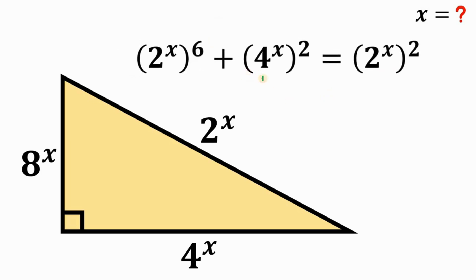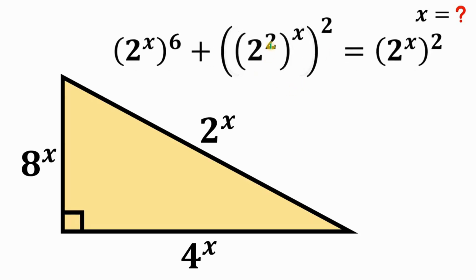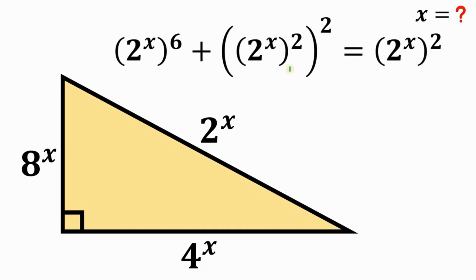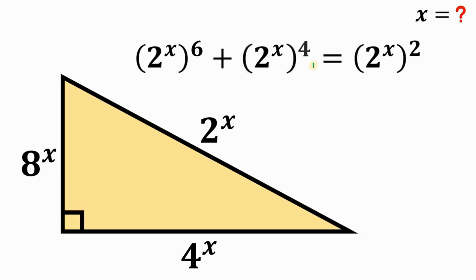We do the same thing to the expression 4 raised to the power of x, raised to the power of 2. This 4 can be rewritten as 2 raised to the power of 2. We can interchange the exponents 2 and x, and using the laws of exponents we multiply this 2 and this 2, giving us 2 raised to the power of x, raised to the power of 4.